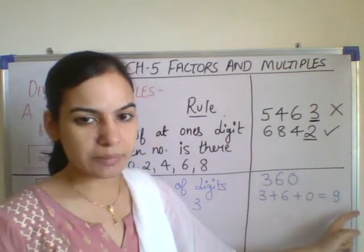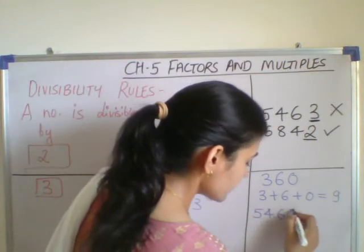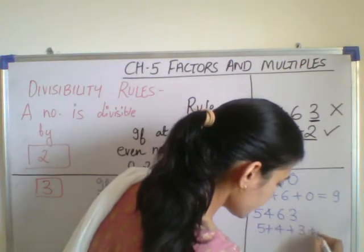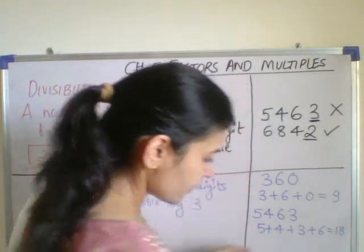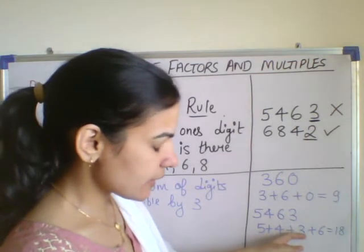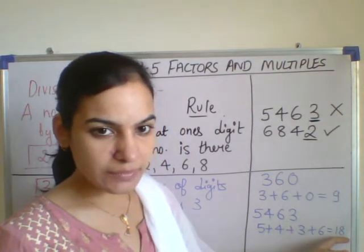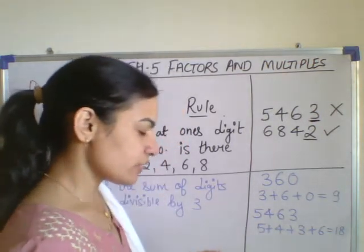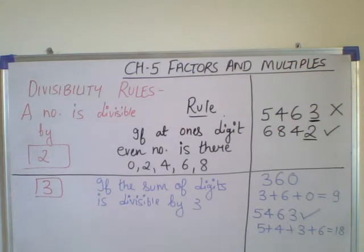9 is divisible by 3, so 360 is divisible by 3. Let us take another example: 5463. We add all the digits: 5 plus 4 plus 6 plus 3 equals 18. 5 plus 4 is 9, 9 plus 3 is 12, 12 plus 6 is 18. Is 18 divisible by 3? Yes — 3 times 6 is 18. So 5463 is also divisible by 3.